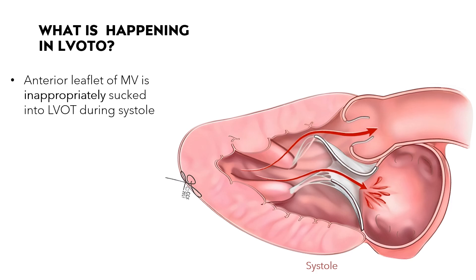What is actually happening in a left ventricular outflow tract obstruction? In systole, the mitral valve should be closed. When the space between the septum and the anterior leaflet of the mitral valve is too close, or the blood flow is too fast, the pressure drops due to the Venturi effect, and the anterior leaflet of the mitral valve gets sucked into the LVOT during systole, causing two problems: it obstructs the ejection of blood into the aorta, and it increases mitral regurgitation. Both lead to decreased cardiac output.